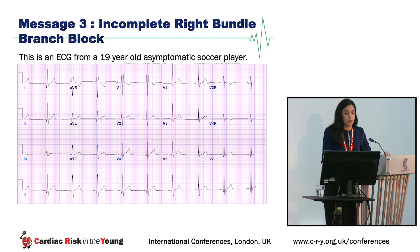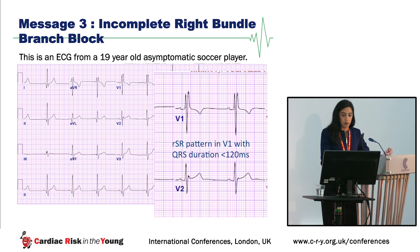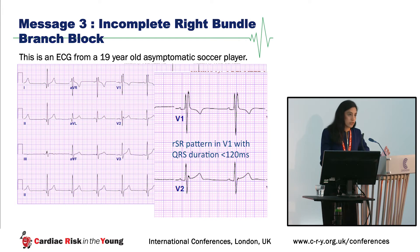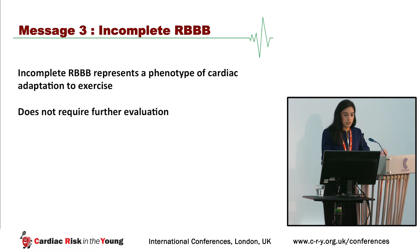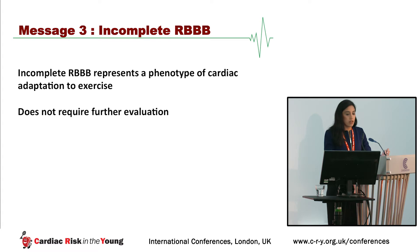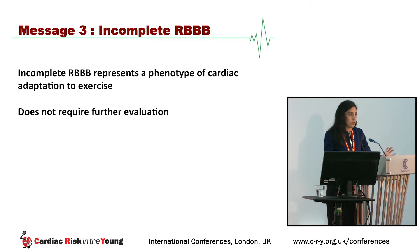Message three: incomplete right bundle branch block. This is an ECG of a 19-year-old asymptomatic soccer player with incomplete right bundle branch block, which is an RSR' pattern in V1 with a QRS duration of less than 120 milliseconds. Some studies have shown that the delay in RV conduction in athletes is due to RV remodeling with increased cavity size. Message three: incomplete right bundle branch block represents a phenotype of cardiac adaptation to exercise and does not warrant further evaluation in the absence of symptoms or family history.